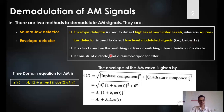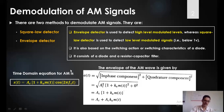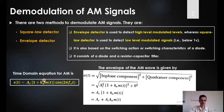In both cases, we are using diodes and some resistor-capacitor filters. In the envelope detector, it is based on switching action — the switching characteristic of the diode. The time domain equation for AM is the conventional AM equation, where the amplitude of the message signal changes. Accordingly, the amplitude of this carrier with frequency FC also changes.